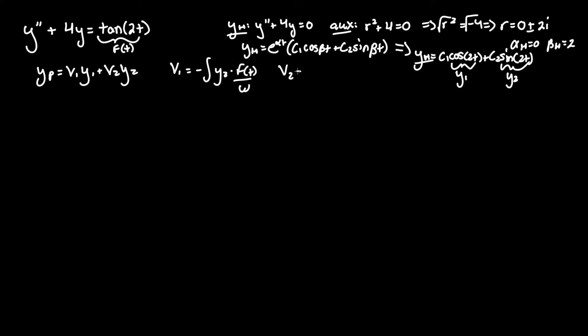So for v2 you do the same thing. This equals the positive integral of y1 times f of t over Wronskian once more. And honestly that's it. All we have to do is find Wronskian and do this integral and we're done.